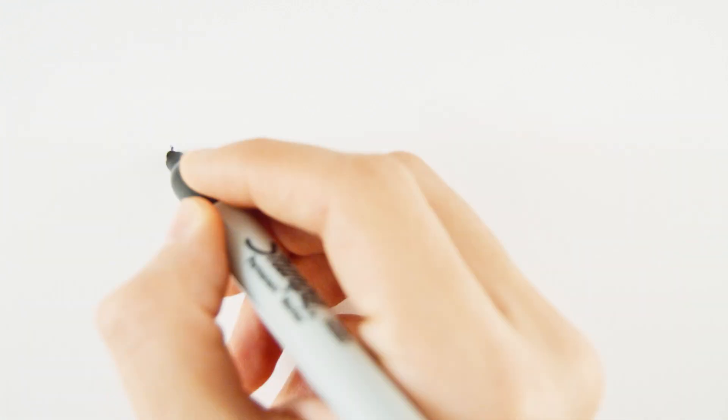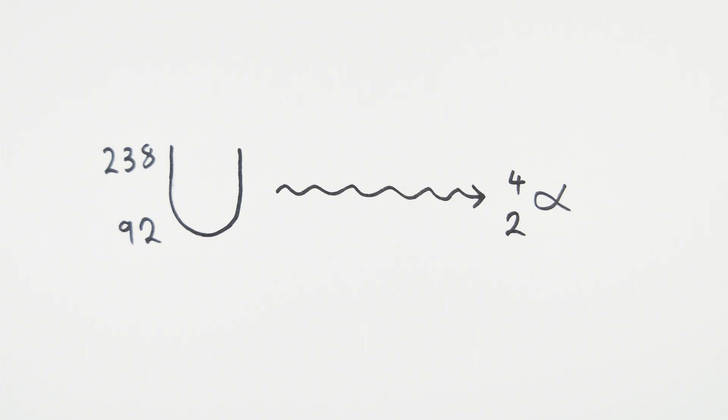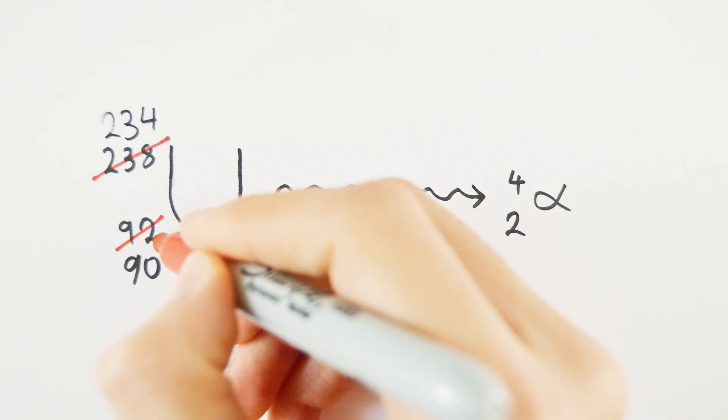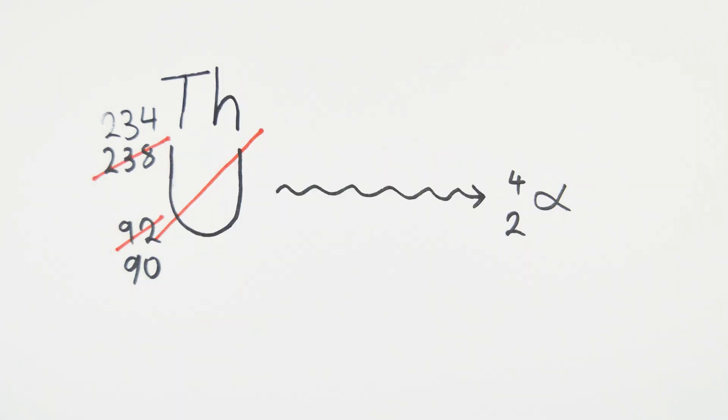Alpha and beta decay can be represented through nuclear equations. An alpha particle consists of two protons and two neutrons. This means that the mass number of an atom would decrease by four and the atomic number by two.